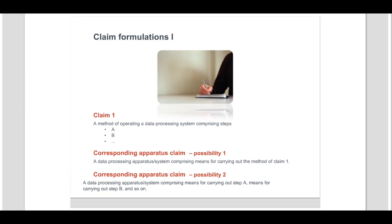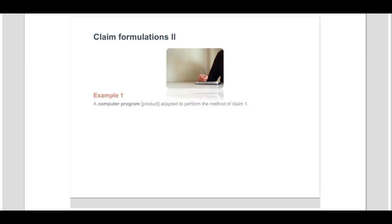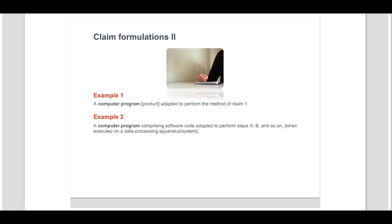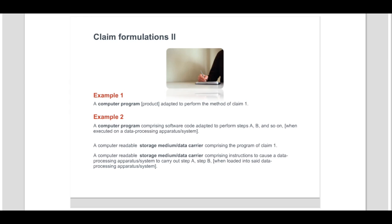For the computer program and storage medium with computer program claim categories, similar formulations are possible. Two example formulations are: a computer program product adapted to perform the method of claim 1, or a computer program comprising software code adapted to perform steps A, B, and so on when executed on a data processing apparatus system. A computer readable storage medium comprising the program of claim 1, or a computer readable storage medium comprising instructions to cause a data processing apparatus system to carry out steps A, B when loaded into said data processing apparatus system. The expressions in brackets are optional.